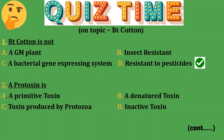Question 2: A protoxin is — Option A: a primitive toxin; Option B: a denatured toxin; Option C: toxin produced by protozoa; Option D: inactive toxin. The right answer is Option D — inactive toxin. Protoxin means inactive toxin; the prefix 'pro' means inactive.